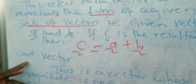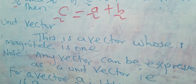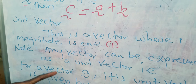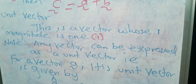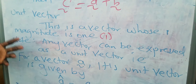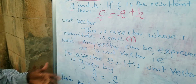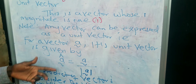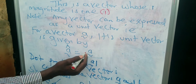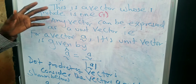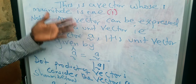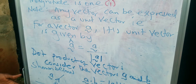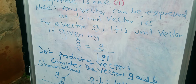A unit vector is a vector whose magnitude is one. Any vector can be expressed as a unit vector — you can always find a corresponding vector of magnitude one. For a vector a, its unit vector is written as â (read as 'a hat') and is found by dividing the vector by its magnitude: â = a / |a|. Whenever you are asked to find a unit vector, your final answer will be a vector of magnitude one.